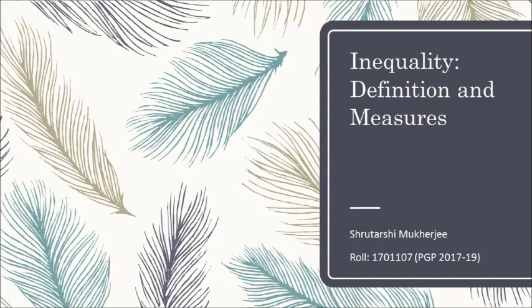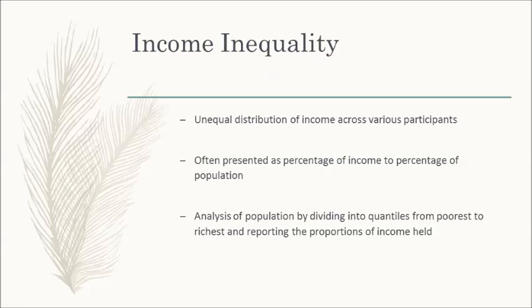Income distribution has always been a central concern of economic theory and economic policies. Classical economists such as Adam Smith and David Ricardo were concerned with factor income distribution, which is the distribution of income between the main factors of production — land, labour, and capital. Income distribution is often related to wealth distribution. Basically, income inequality is the unequal distribution of household or individual income across all the various participants in the economy, and it is often represented as a percentage of income to the percentage of the population. The most simple way to understand inequality is by analyzing the population and breaking it into quantiles from poorest to richest and reporting the proportions of income held by them.